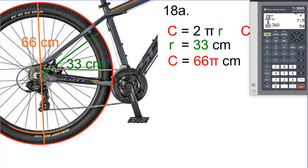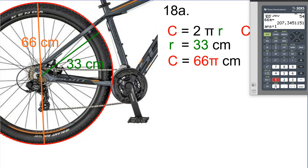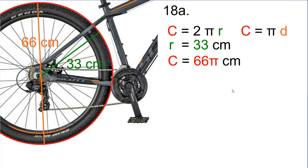Now they wanted it in terms of meters. So I'm going to put in 66π and convert it to a decimal — otherwise it'll just give me 66π back. This is how many centimeters. If I want to change that to meters, remember there are 100 centimeters in a meter, so just divide by 100 or move the decimal twice, which leaves us with 2.07 meters.